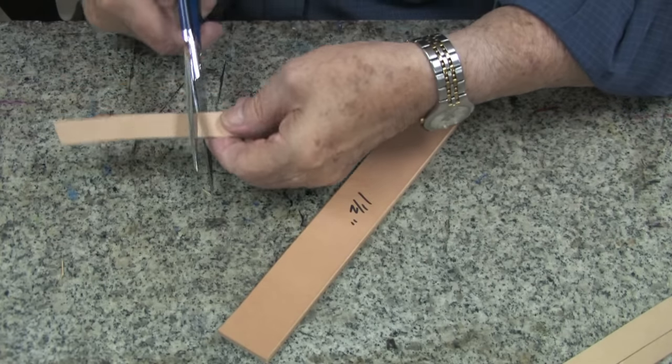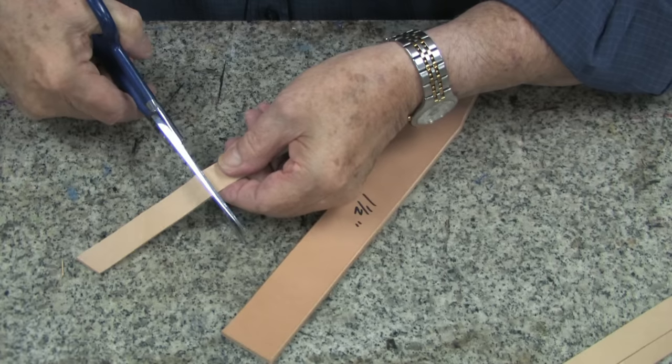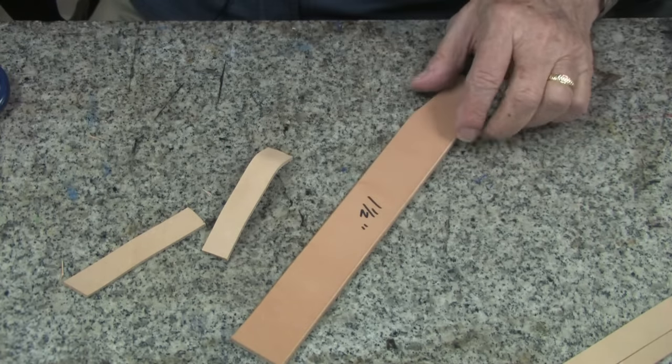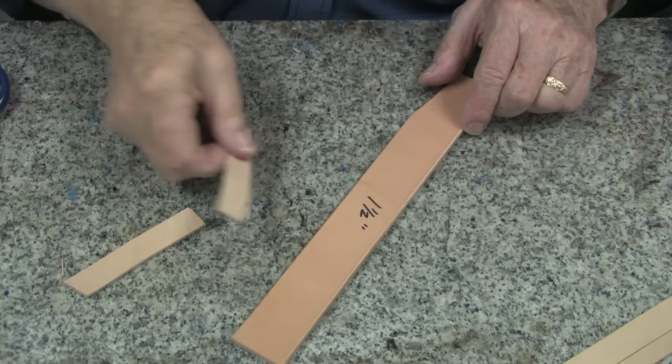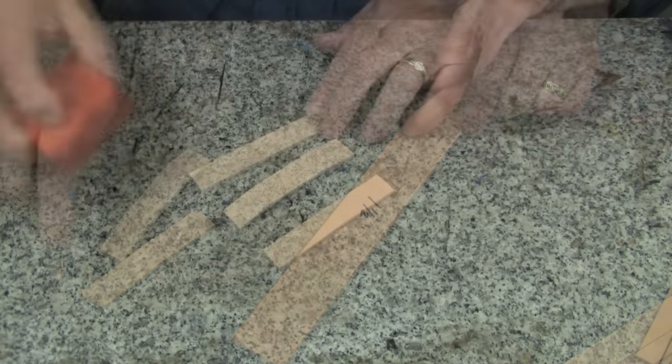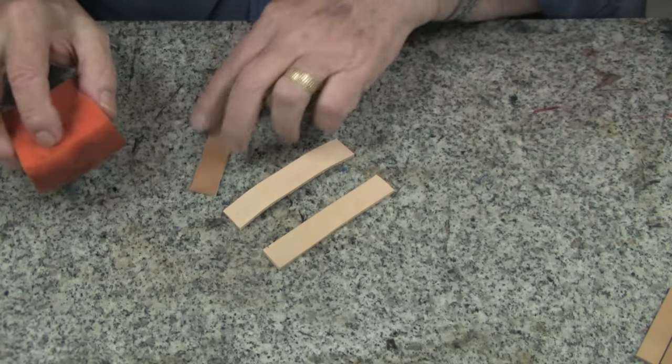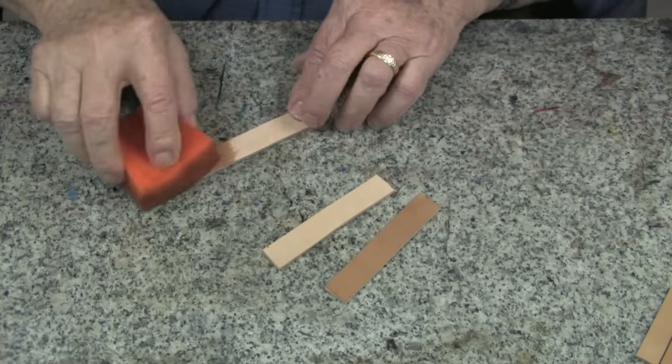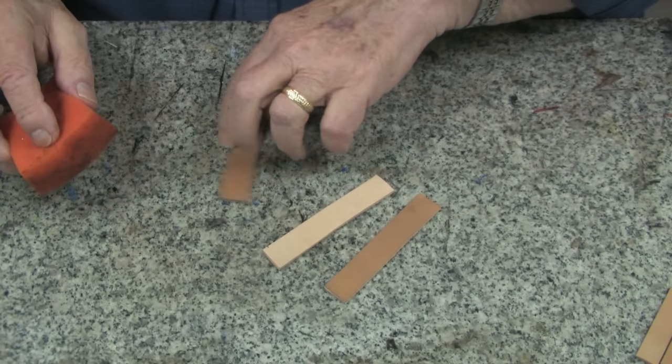Then it's just a matter of cutting it off cleanly. And now we know what size we need for a one and a half inch belt. And now to do the tooling, we simply dampen these, and there are several ways we can do the tooling.